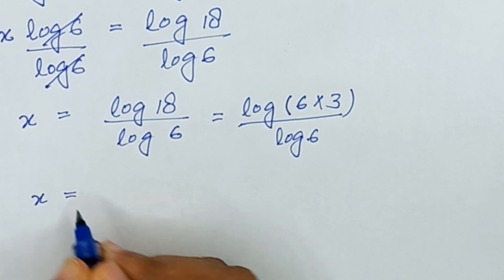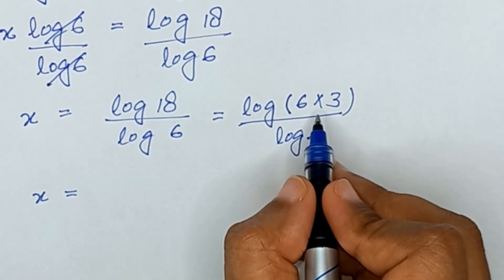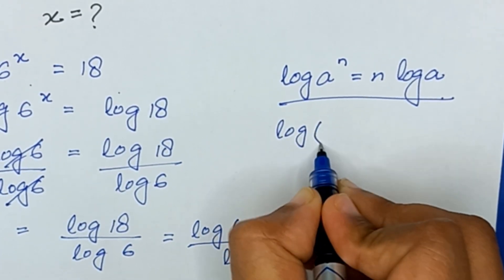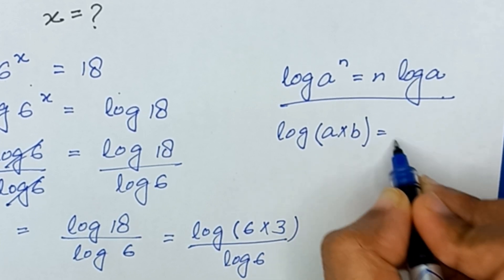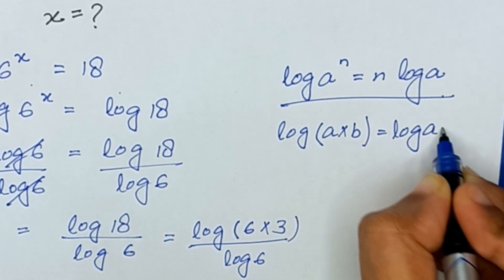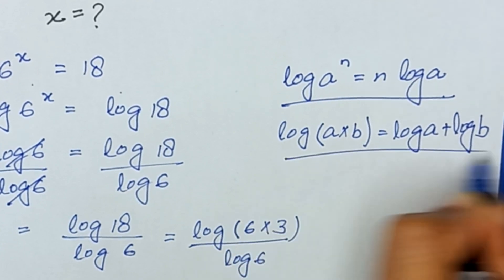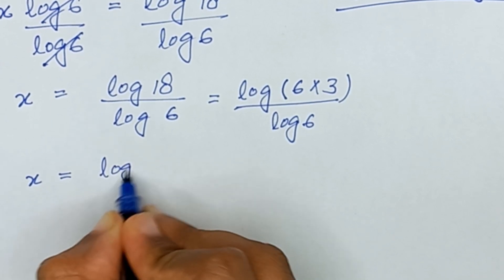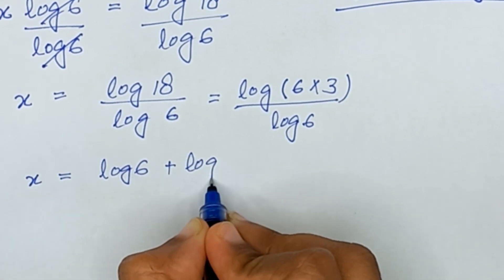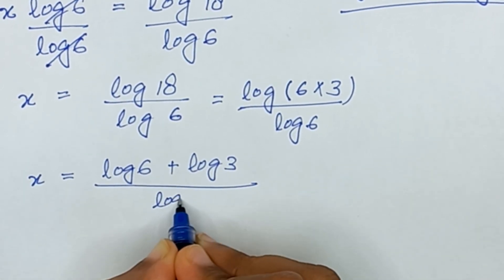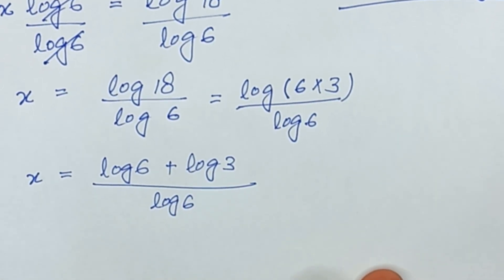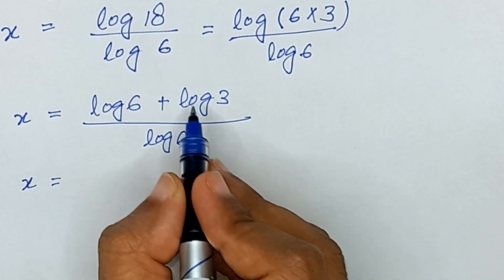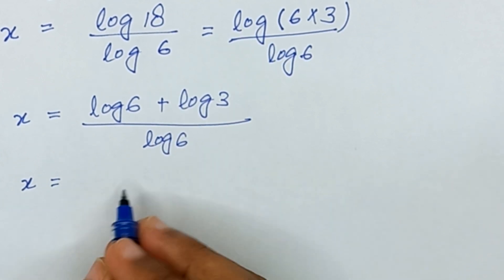So x equals log(6×3) over log(6). Here we apply the law of logarithm: log(a × b) = log(a) + log(b). It becomes log(6) plus log(3), all divided by log(6). We then split this as log(6)/log(6) plus log(3)/log(6).